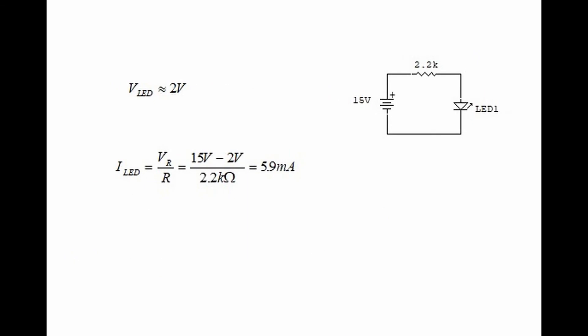When working with light emitting diodes, let's assume that they will always drop 2 volts. An LED must always be used with a series resistor to limit current. To find the current through the LED, we find the current through the series resistor: if the LED drops 2 volts and the source is 15 volts, the voltage across the series resistor is 15 minus 2 volts, divided by the 2.2-kilohm series resistor, giving a current of 5.9 milliamps.